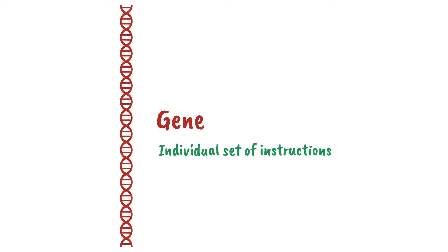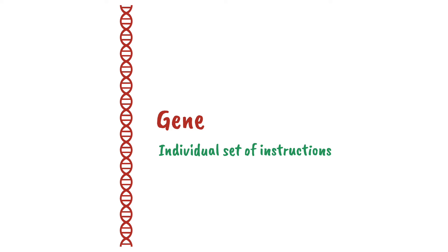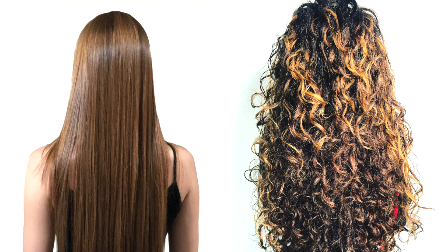There are genes that determine eye color, there's a gene that determines whether you'll have straight or curly hair, and there's a gene that gives instructions to specific cells in the pancreas to produce insulin, a protein that helps control your blood glucose levels.